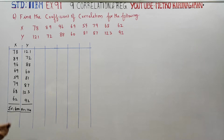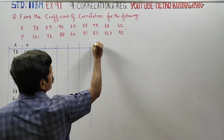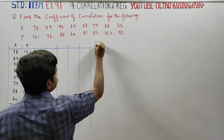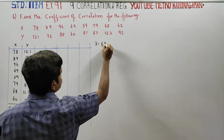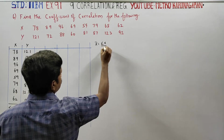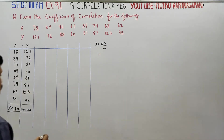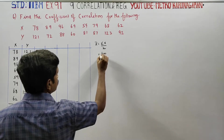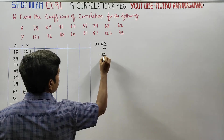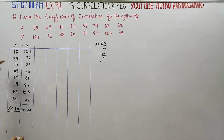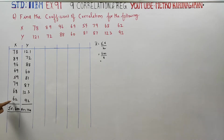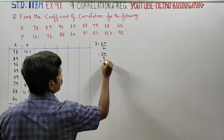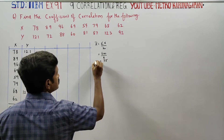Now, the mean X̄ is calculated as Sigma X by N. Sigma X is 600, divided by N which is 8 — there are 8 values. Dividing, the answer is 75. So X̄ equals 75.